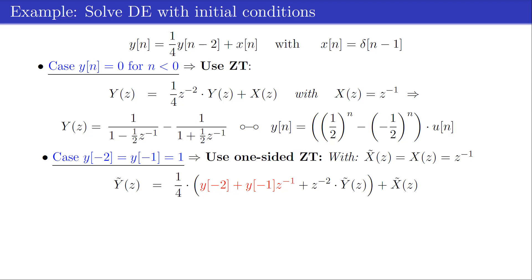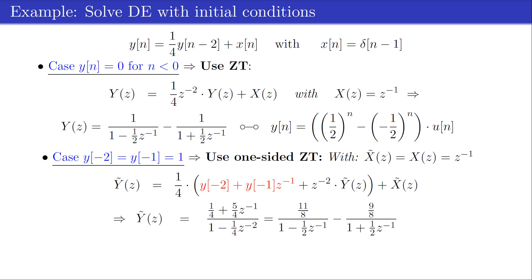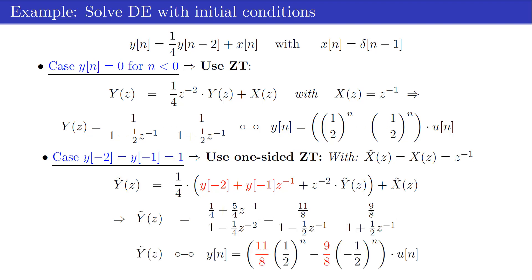Using the shift property of the one-sided z-transform together with the initial conditions results in the given fraction, which can be expanded as a sum of two terms related to a sum of two weighted exponentially decaying sequences. The influence of the initial conditions is reflected by the two weights.